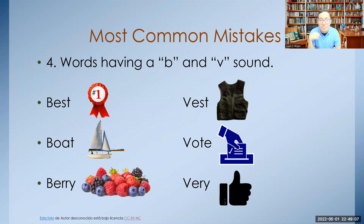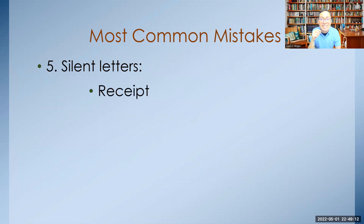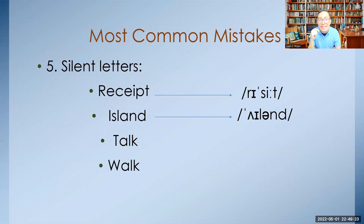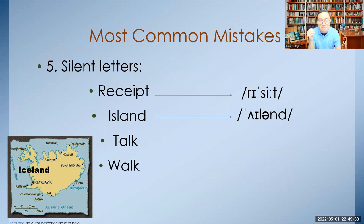We still have one more: silent letters. For example, let's see how we pronounce these words. 'Receipt' — the P is silent. 'Island' — the S is silent. We usually confuse this one with the country Iceland, and actually Iceland is an island. 'Talk' and 'walk' — the L doesn't sound. Thank you very much.